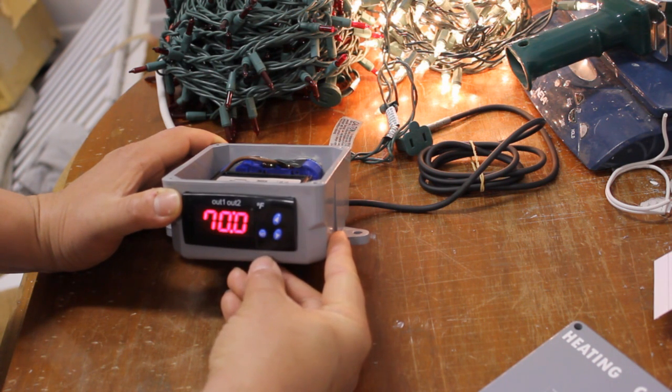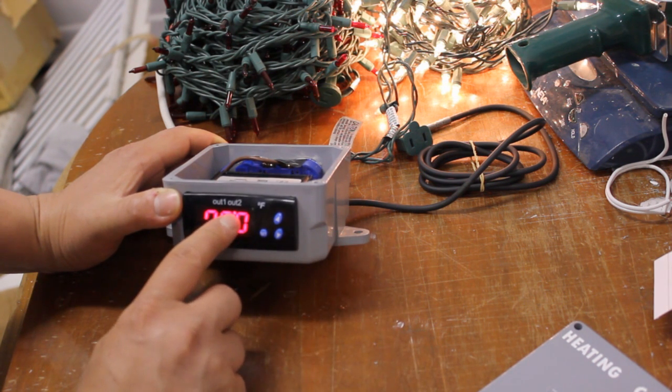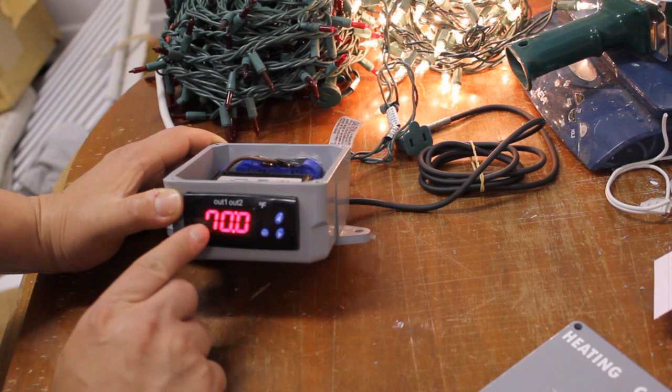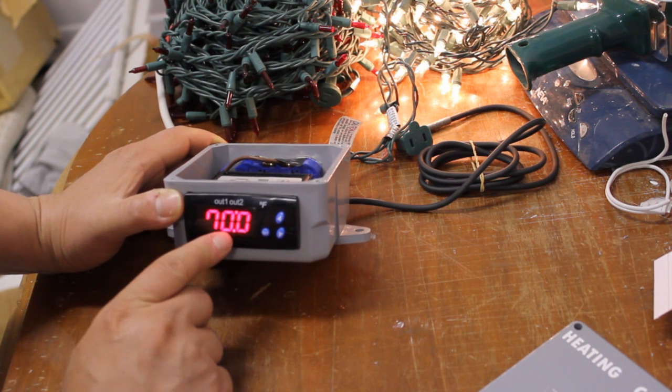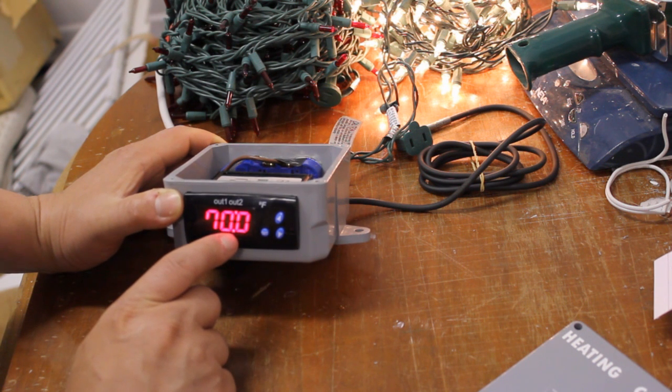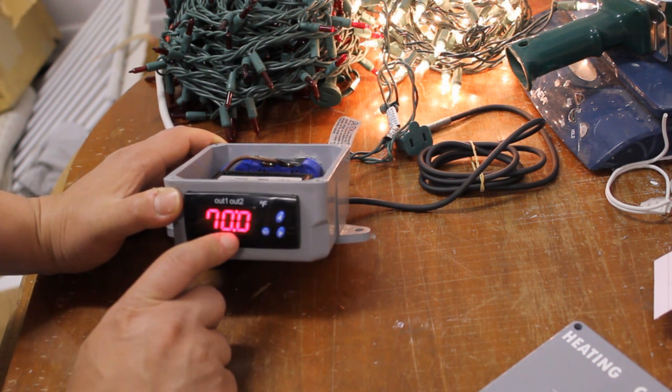Now if I press set again you see the dot moves over to the out two and that means that I have my set point two at 70 degrees Fahrenheit. And that means if I reach that temperature my cooling circuit will kick in to turn the compressor in the refrigerator on.